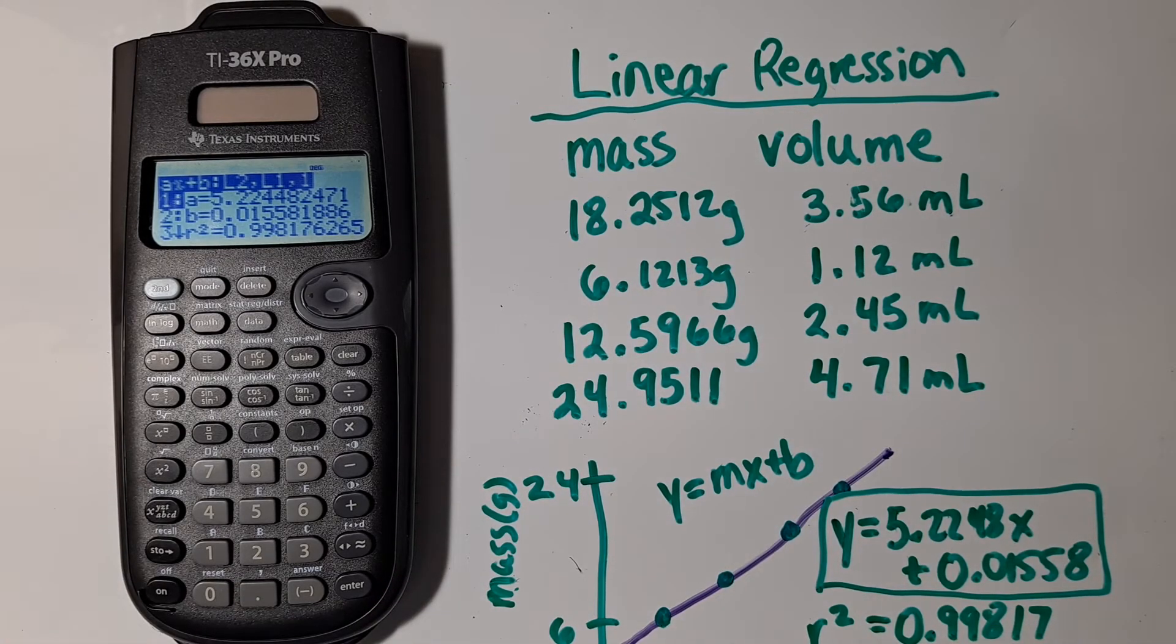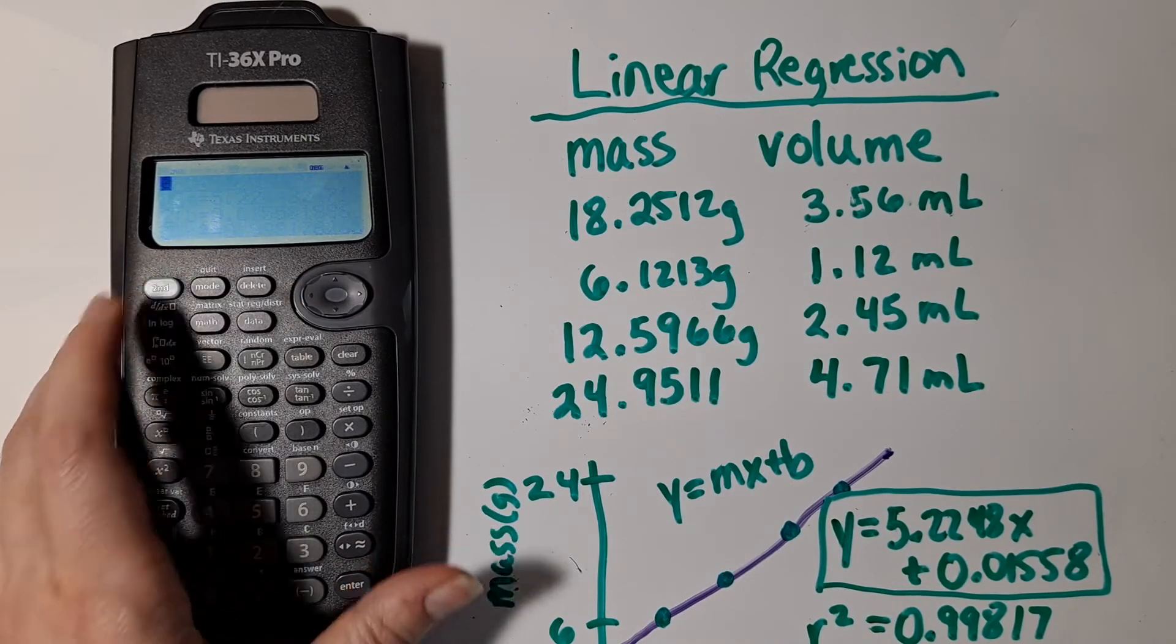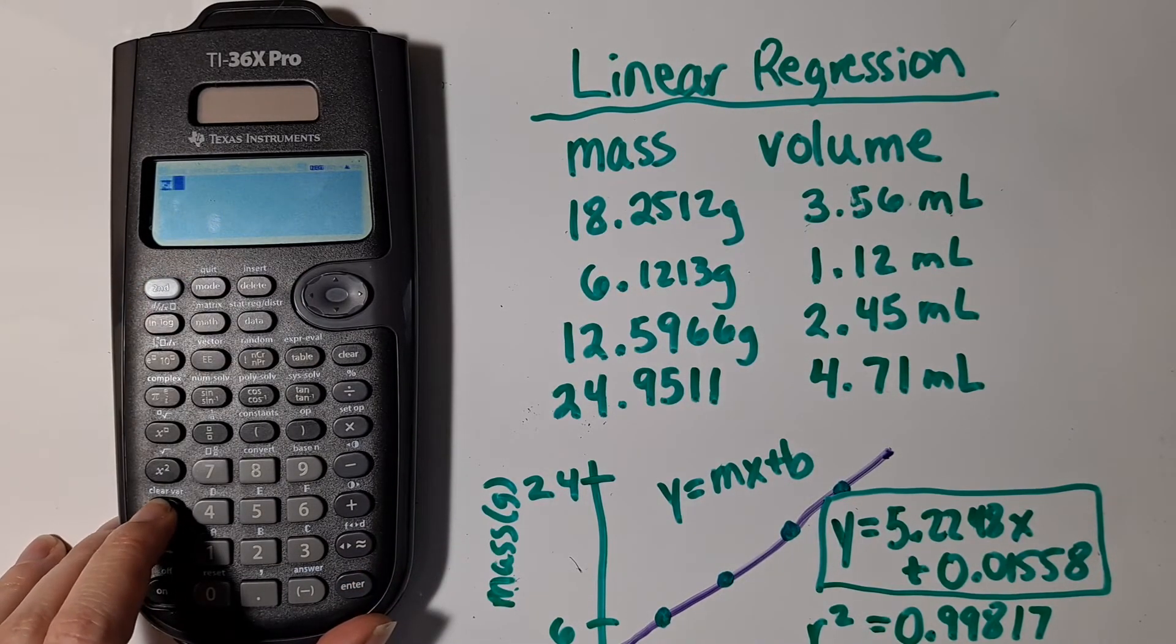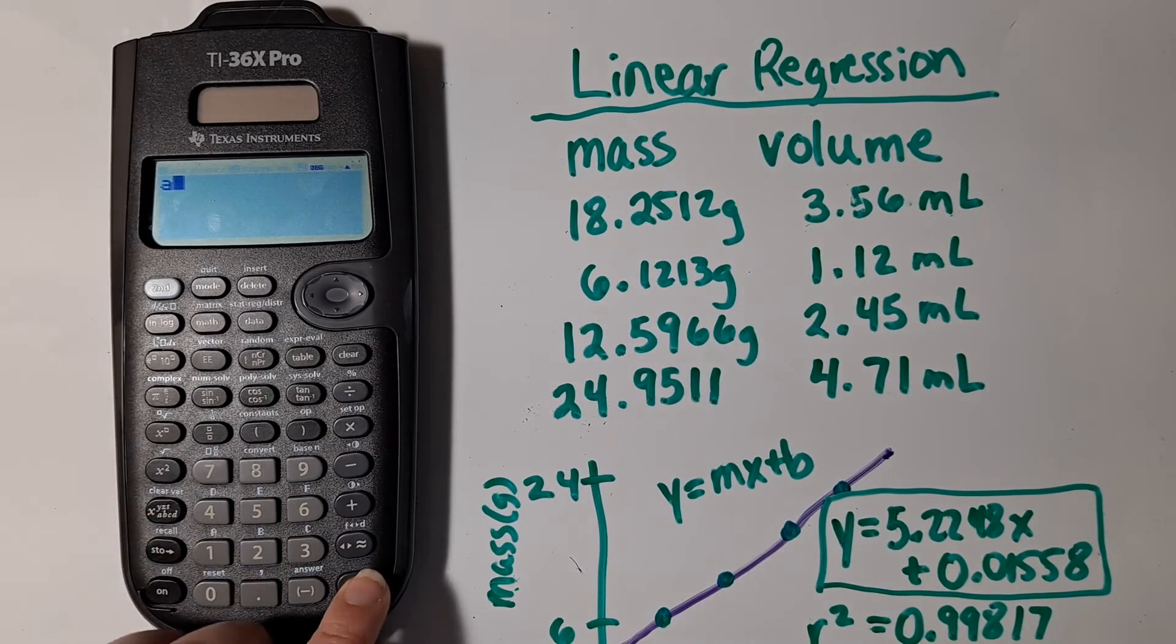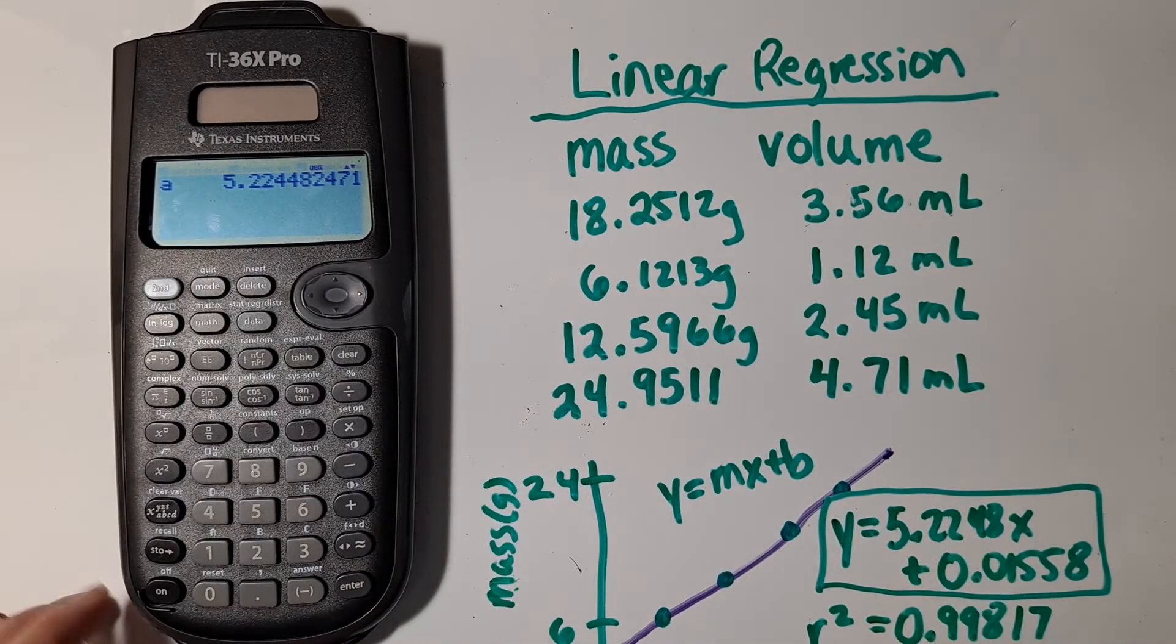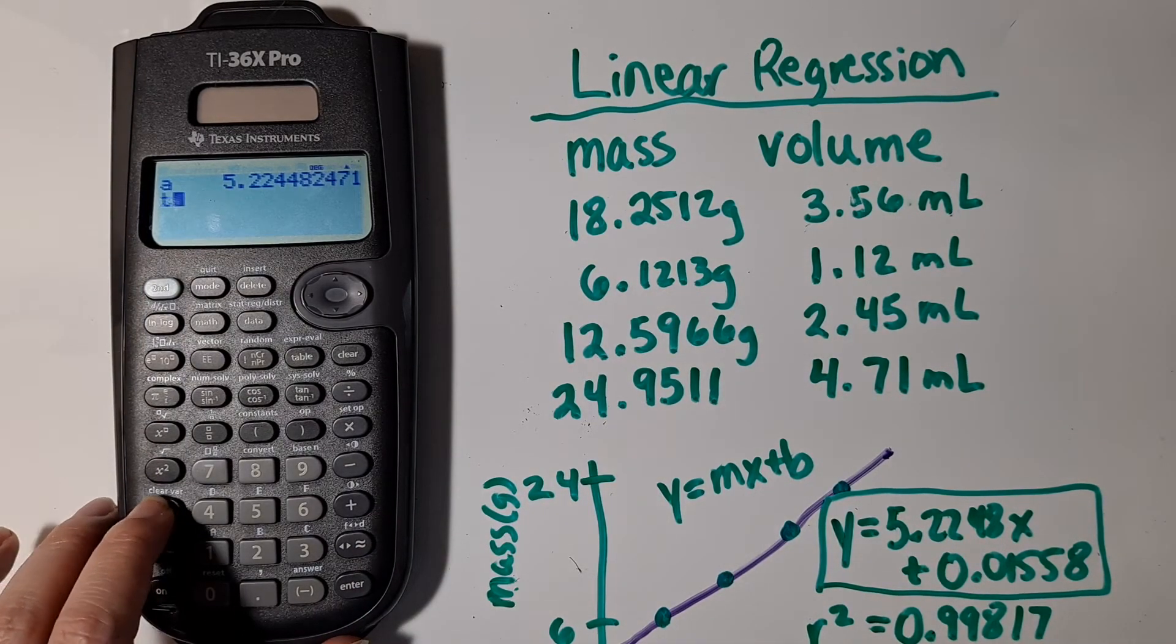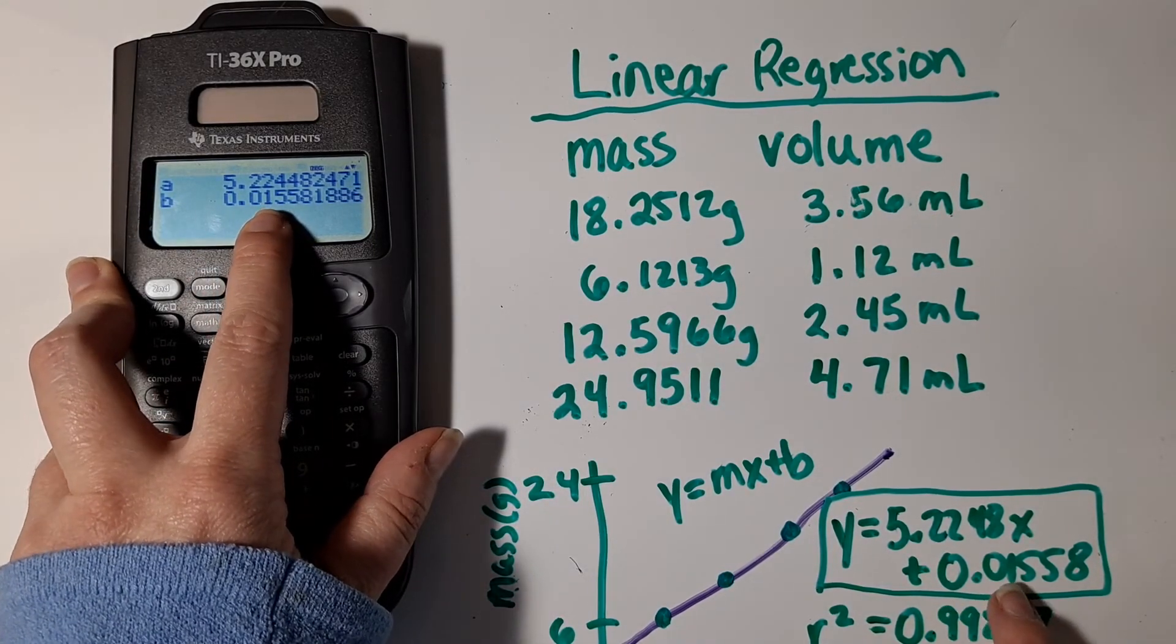Now, what's neat about this is if we quit in this menu and we pull up A by hitting that X button a bunch of times, we can see that this number is stored as A. And then if we tap that button some more, then that is equal to B.